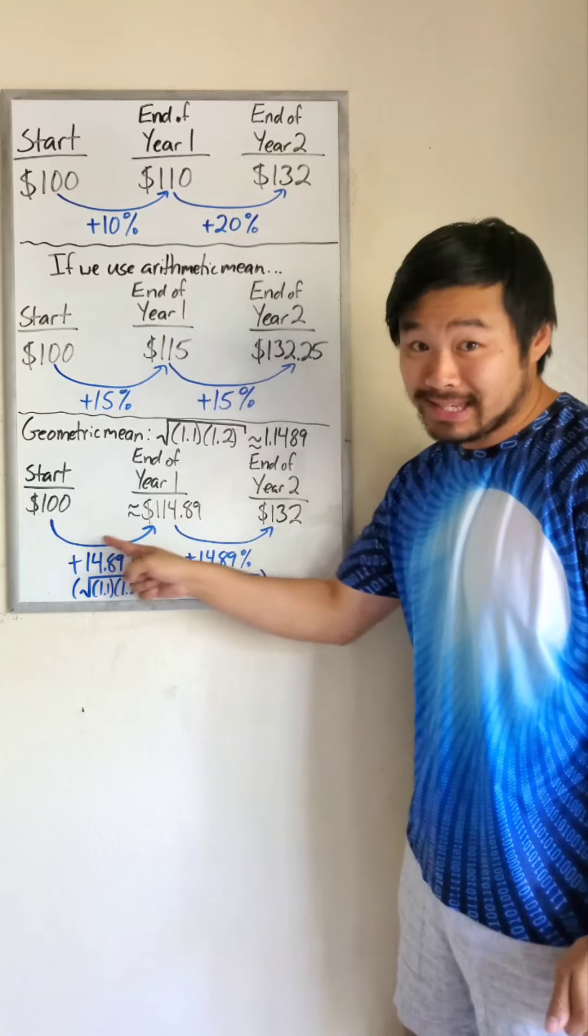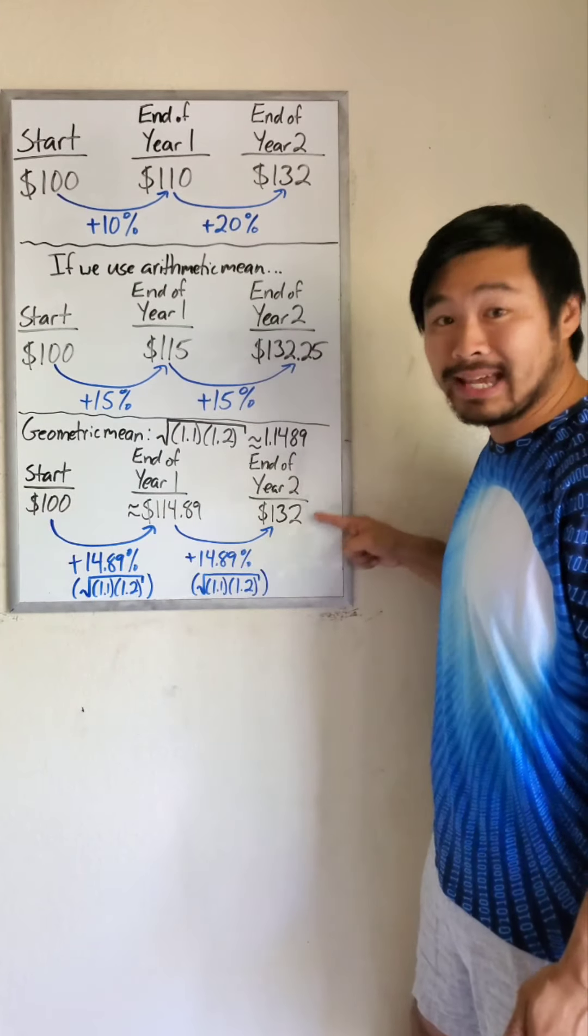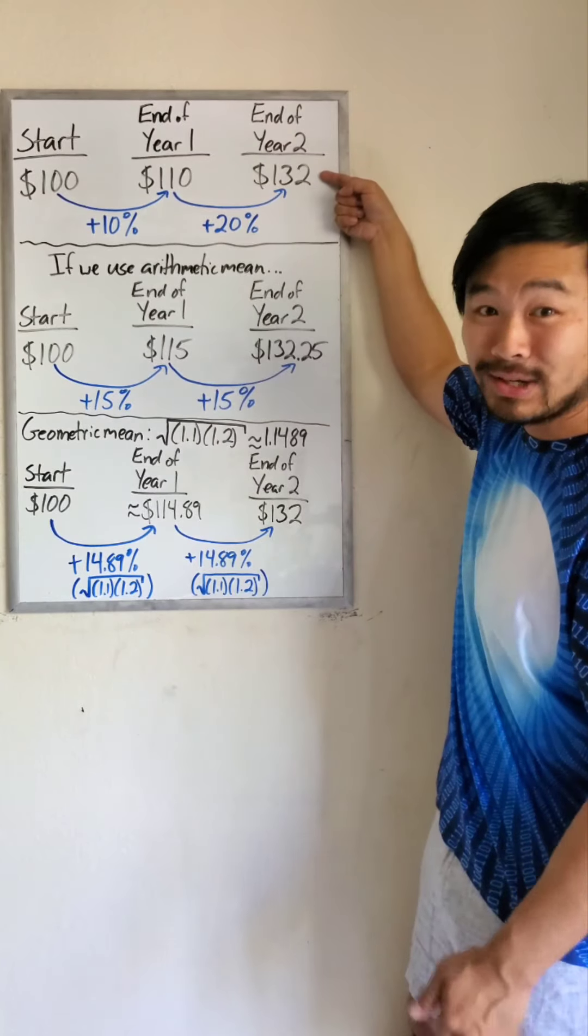So if these have to be the same number, it would be around 14.89%, and we see that we get the same result as what actually happened when we do that.